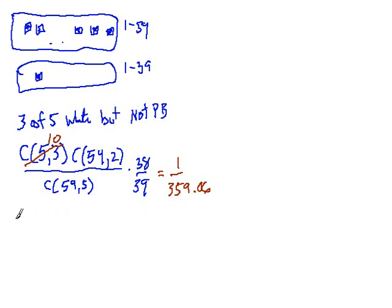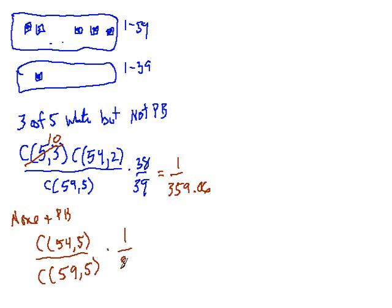The one where we got none right, but the Powerball. Okay, well, if we got none right, well, we selected from among the 54 non-winners, we selected all five. Okay, and then this over combinations, the number of choices altogether, 59 choose 5. But now we won the Powerball, so that's 1 over 39.